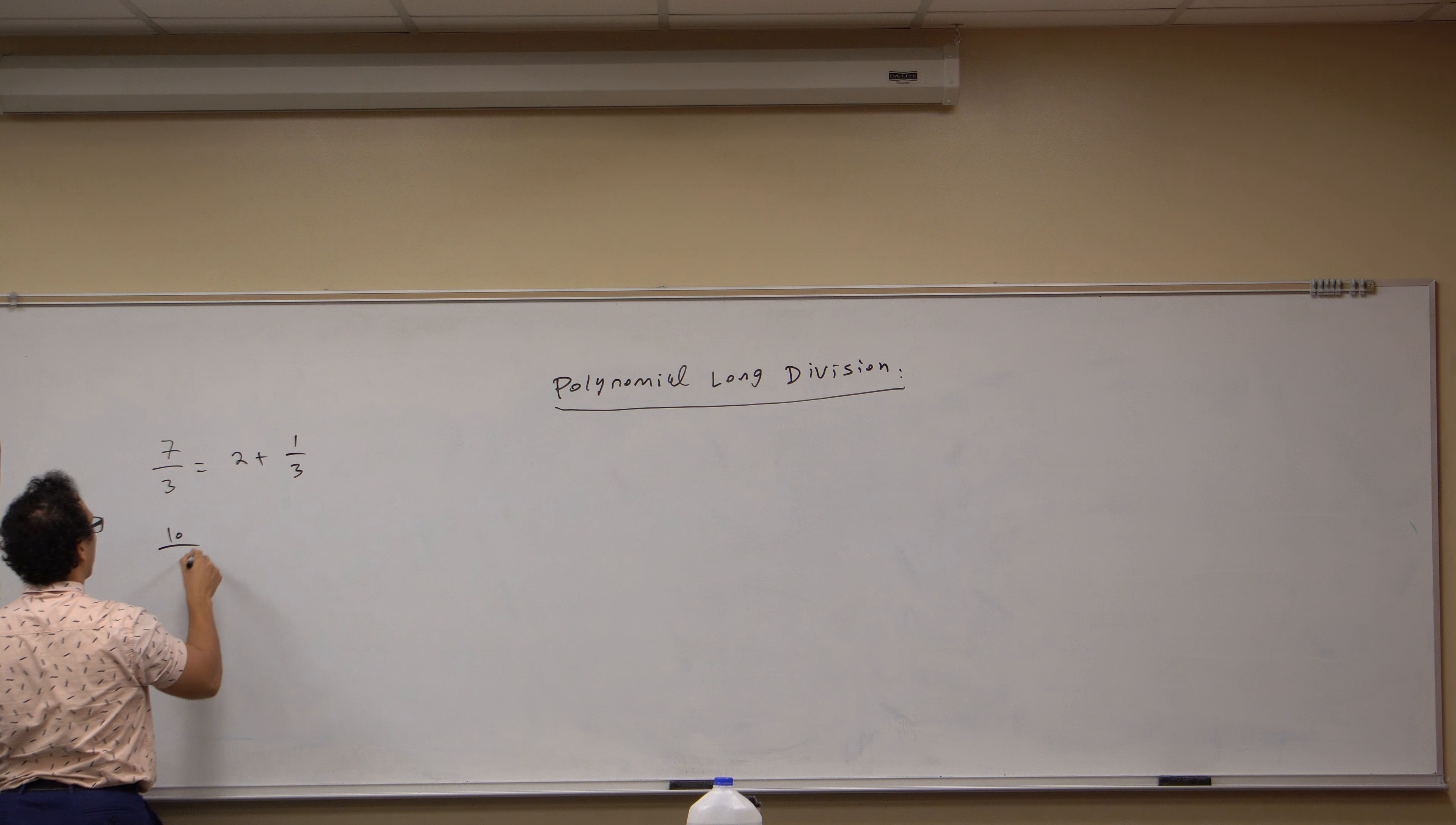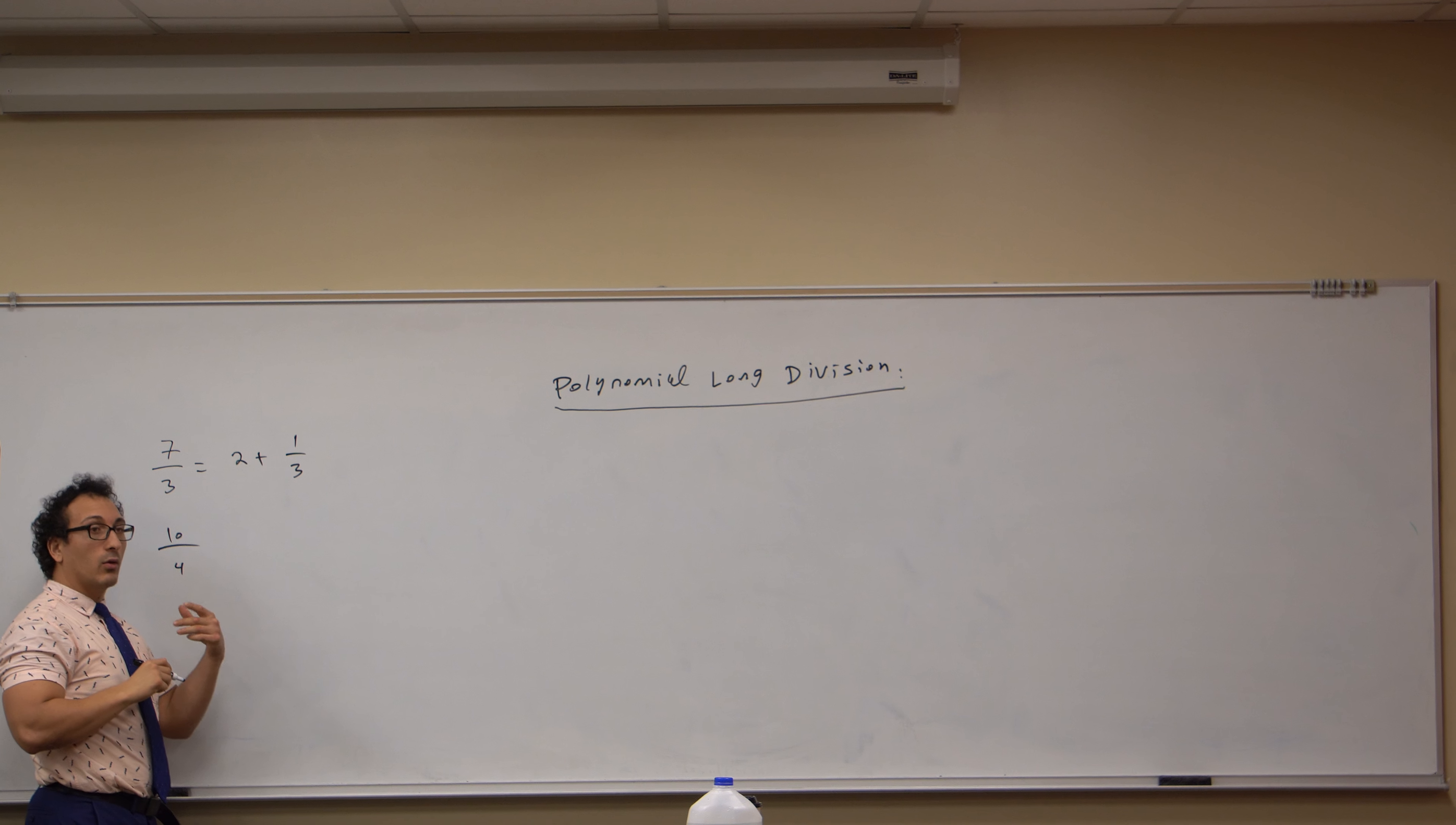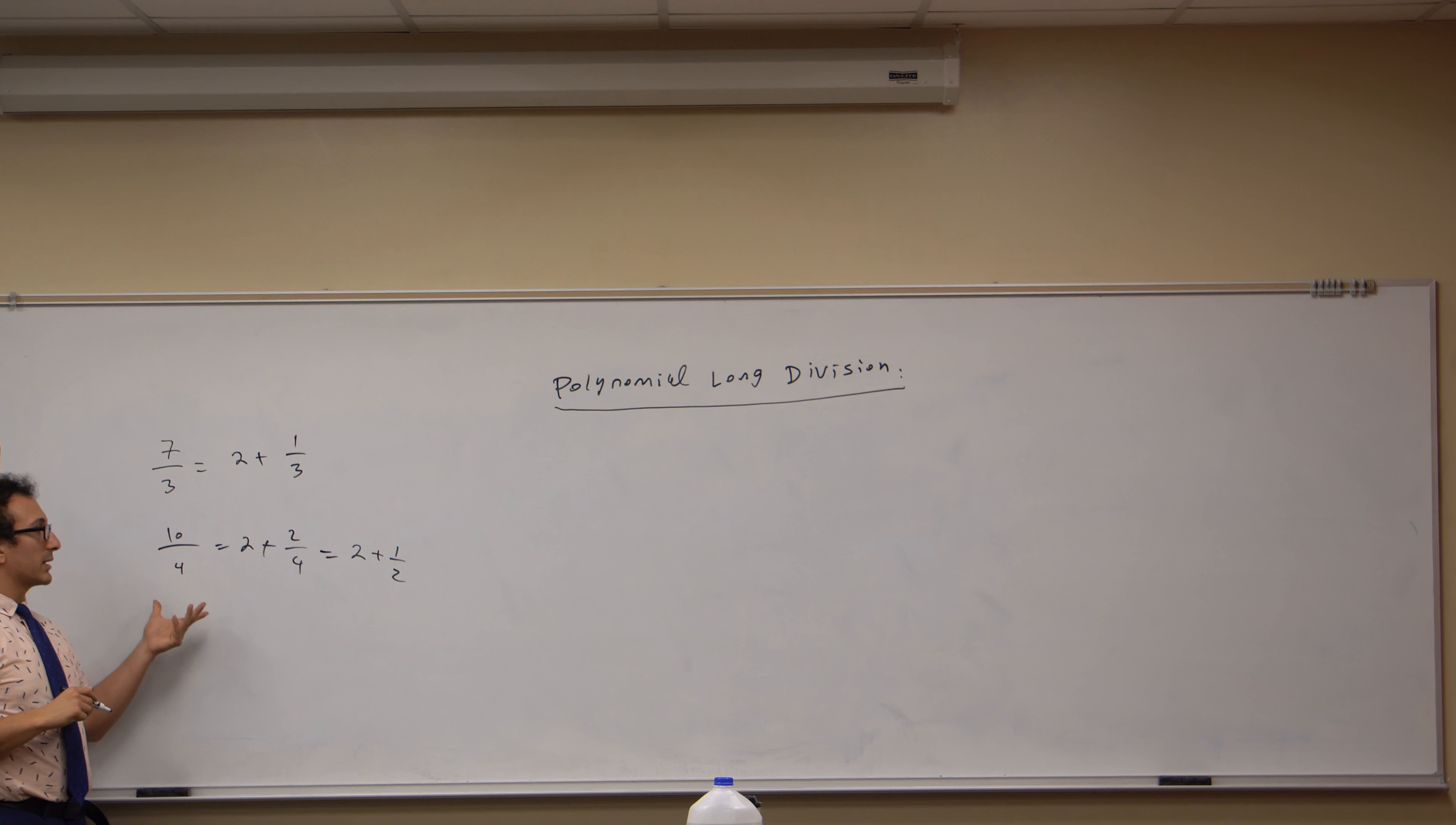Here's another example. Let's do ten divided by four. Four can go into ten—four, eight, that's two—but there's a remainder of two, so it's two fourths, right? And so that just means a half.